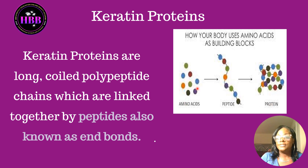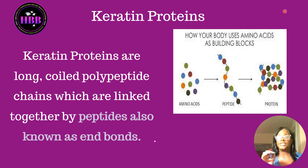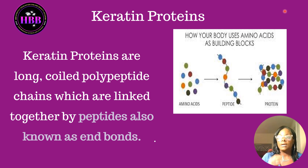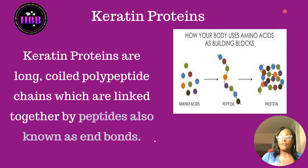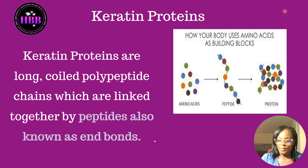Amino acids are the building blocks of proteins. Keratin is a specific protein made up of amino acids, and keratin forms the basis for hair, nails, and the outer layer of our skin.